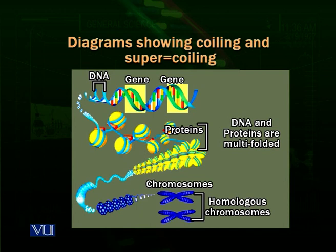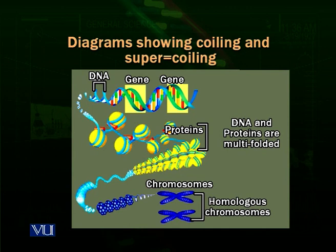If we open the nucleosome further and separate the DNA from the proteins, we can see the DNA as a very long helical structure — two strands going side by side together in a helical fashion. This bare DNA, with no associated proteins, makes the genes and is capable of producing RNA molecules and then proteins.